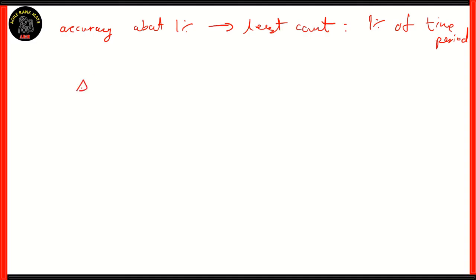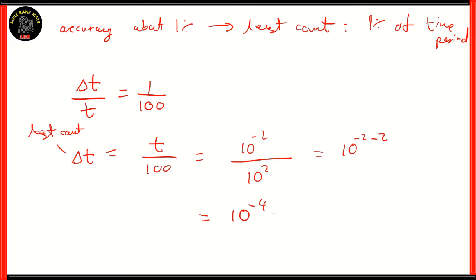So, when we look at the least count, which the error that we're looking for is 1%, so delta T over T is 1 over 100. That represents 1%. So, now, we need to find out delta T, which is the least count. Now, that will be equal to T over 100. And we know T is 10 raised to minus 2 over 100, which is 10 squared. So, we have 10 raised to minus 2 minus 2, which gives us 10 raised to minus 4 seconds.